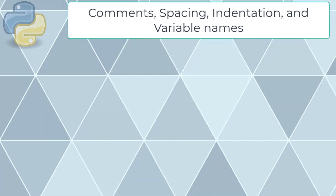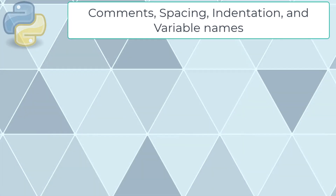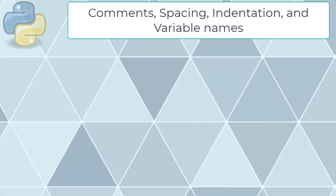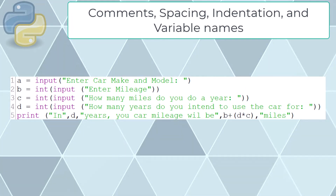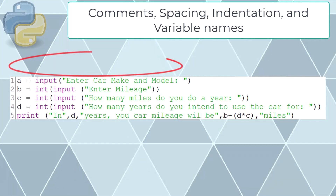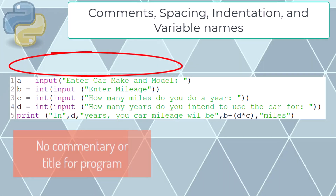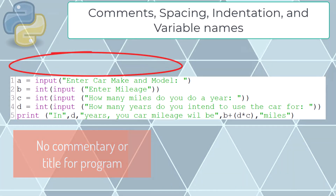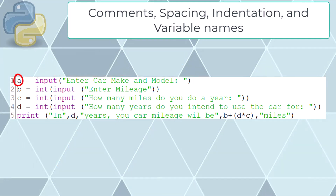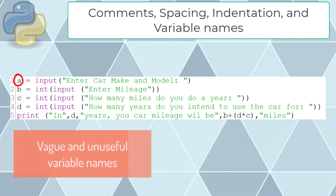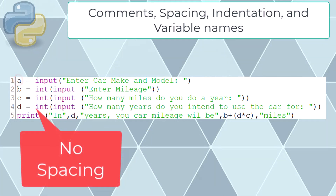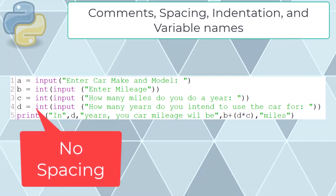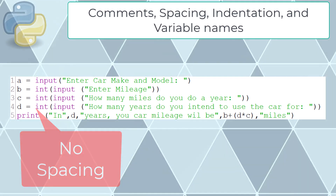Good practice in Python includes using commentary, appropriate spacing, indentation, and meaningful variable names. Here's an example of a badly constructed program. Firstly, there's no commentary explaining what the code does. Secondly, poor variable names give no indication of their purpose. Thirdly, there's no spacing, making the code cluttered and potentially harder to debug.